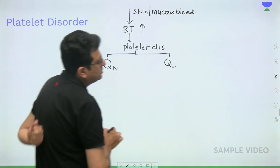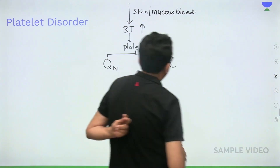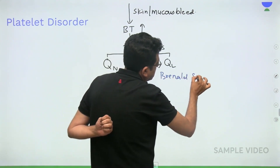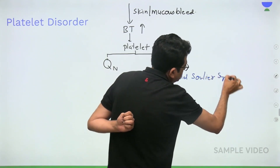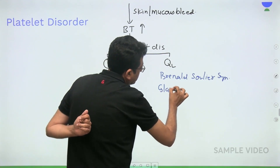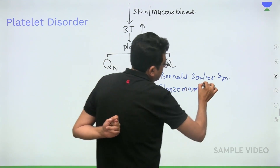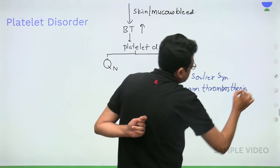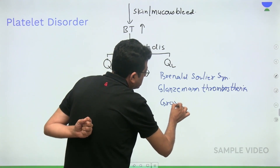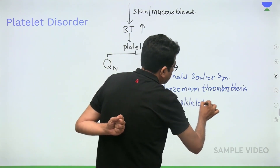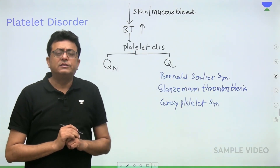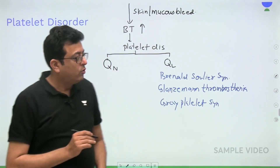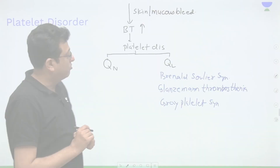Platelet disorder is of two types: qualitative and quantitative. In qualitative disorders, platelet number is normal but function is abnormal. The qualitative platelet disorders include Bernard-Soulier syndrome, Glanzmann thrombasthenia, and Gray platelet syndrome. If a child presents with epistaxis, petechial spots, platelet count of 2 lakh, and prolonged bleeding time, it is a platelet functional disorder.